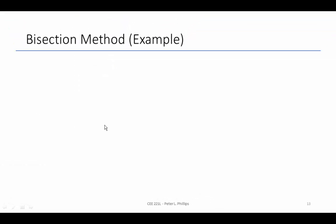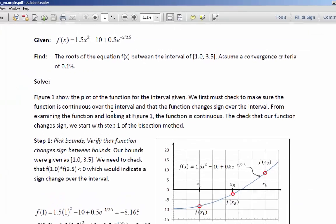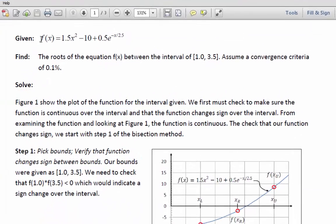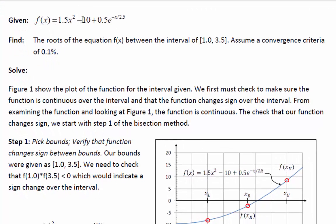Next, we'll take a look at a bisection method example. Here we're given a function F(X) = 1.5X² - 10 + 0.5e^(-X/2.5). We cannot solve this using the quadratic formula because there's this exponential term in here.